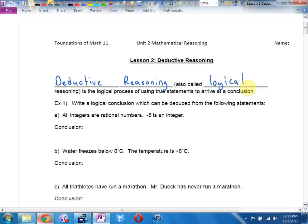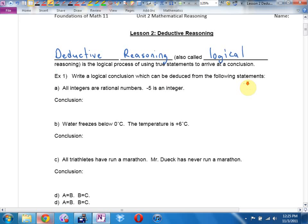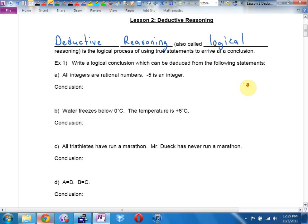Example one says, write a logical conclusion which can be deduced from the following statements. All integers are rational numbers, that's statement number one. Negative five is an integer, that's statement number two. What can you conclude from that logically, reasonably?